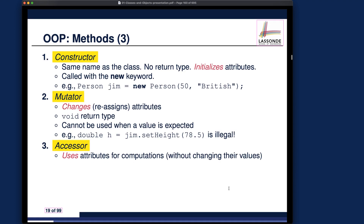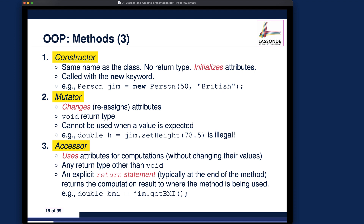We talk about three different kinds of methods, and I include constructor as a special kind for easy categorization. For a mutator, you have a void return type — for example, you call jim.setHeight to change the height of the context object jim to a certain value. The return value is void, so you cannot use the method call as an expression on the right-hand side of a variable assignment. If you try to do that, your code will not compile.